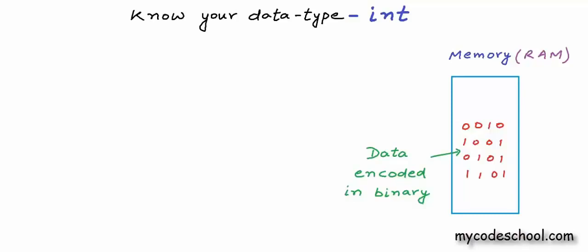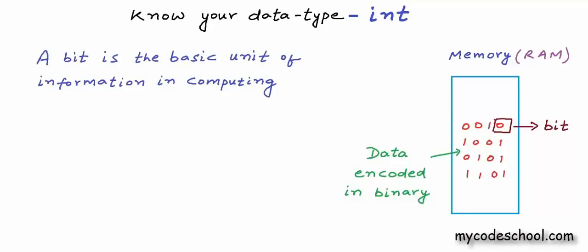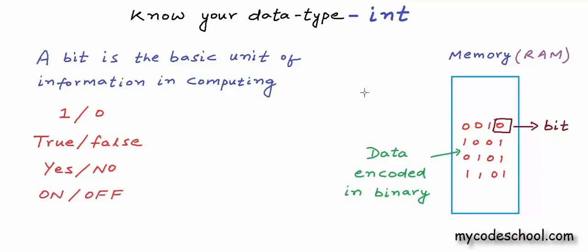Computers deal with text, images, audio, video, and everything is encoded in binary. We'll talk about how other data types get encoded in later lessons. In this lesson we'll talk only about integers. A binary digit is called a bit, and a bit is the lowest or most basic unit of information in computing or digital communication. A bit can have only two values, 1 and 0, and these can be interpreted as true and false, yes and no, on and off, or anything else with only two states.